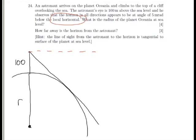That is the direction that the astronaut is looking. He's looking down from his mountain and he's looking at the horizon, and he says that that horizon is 5 milliradians below the local horizontal.